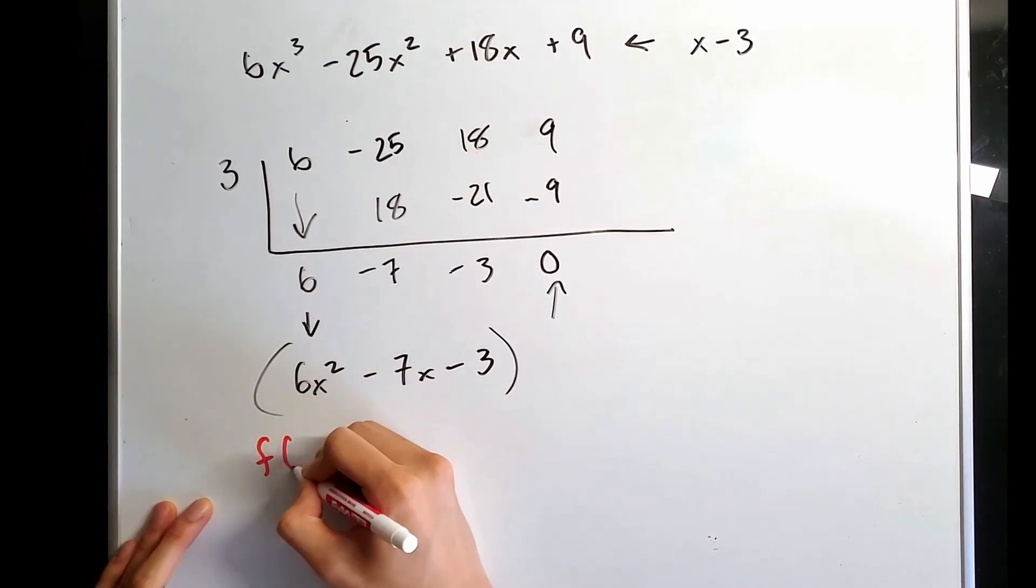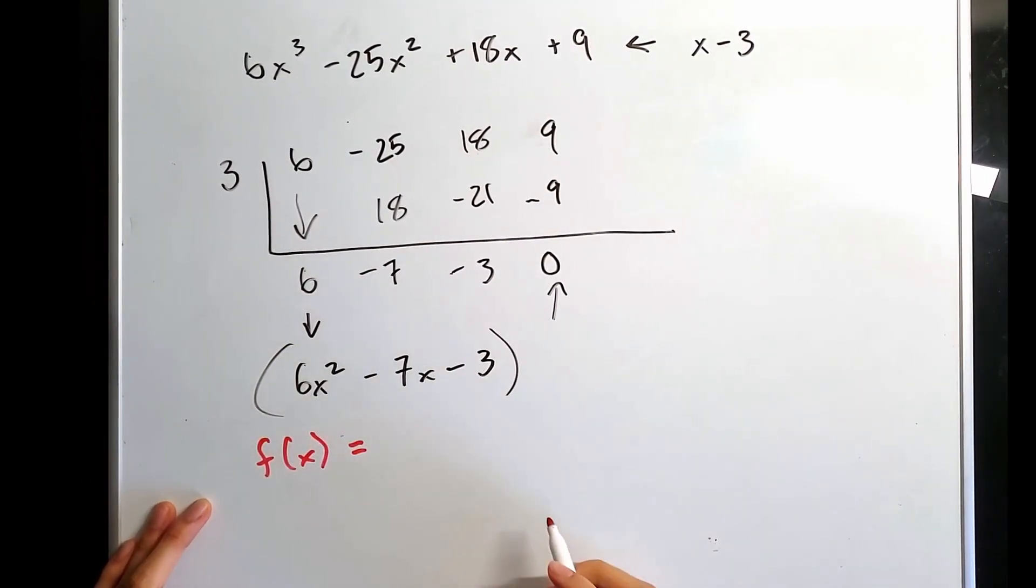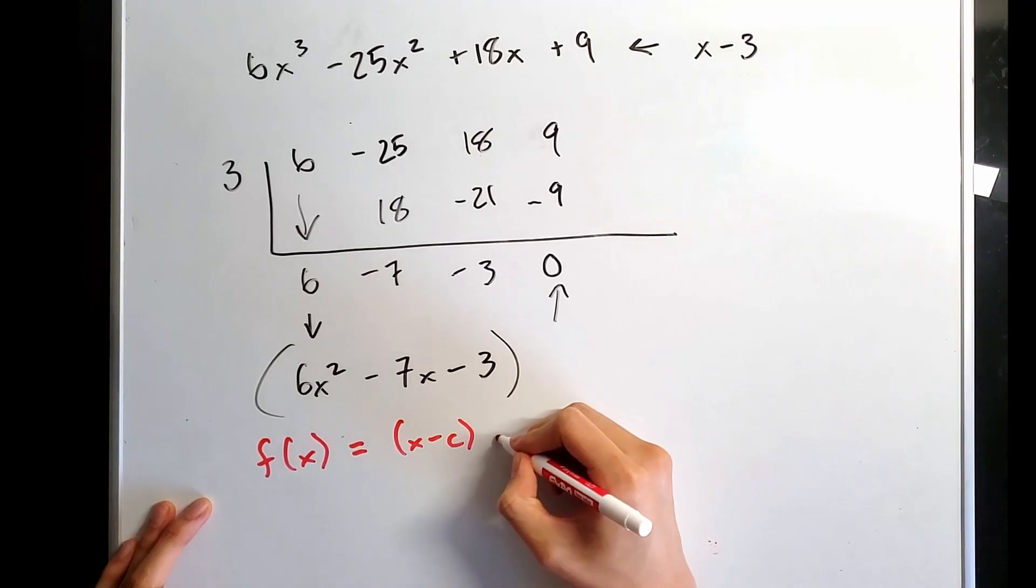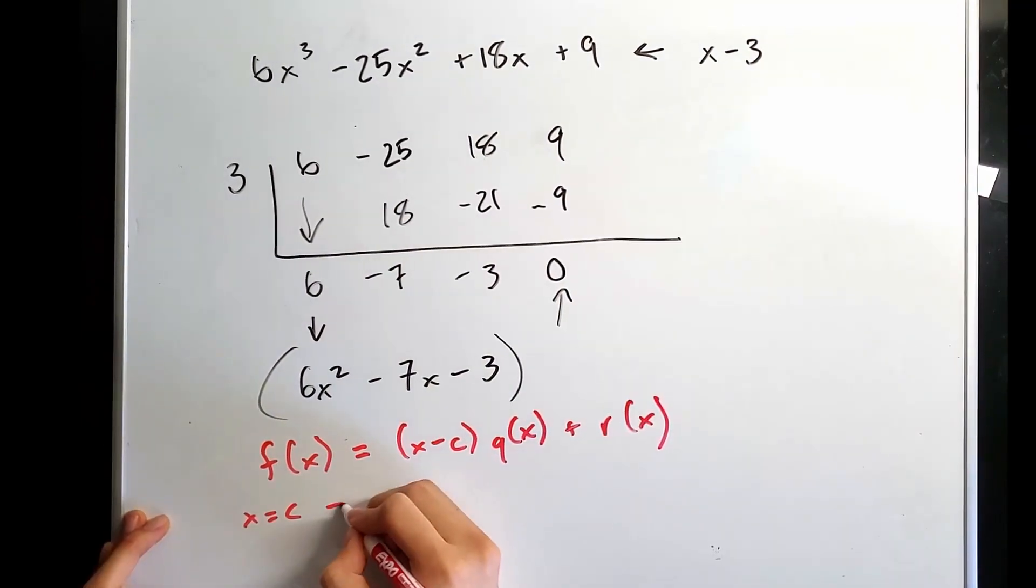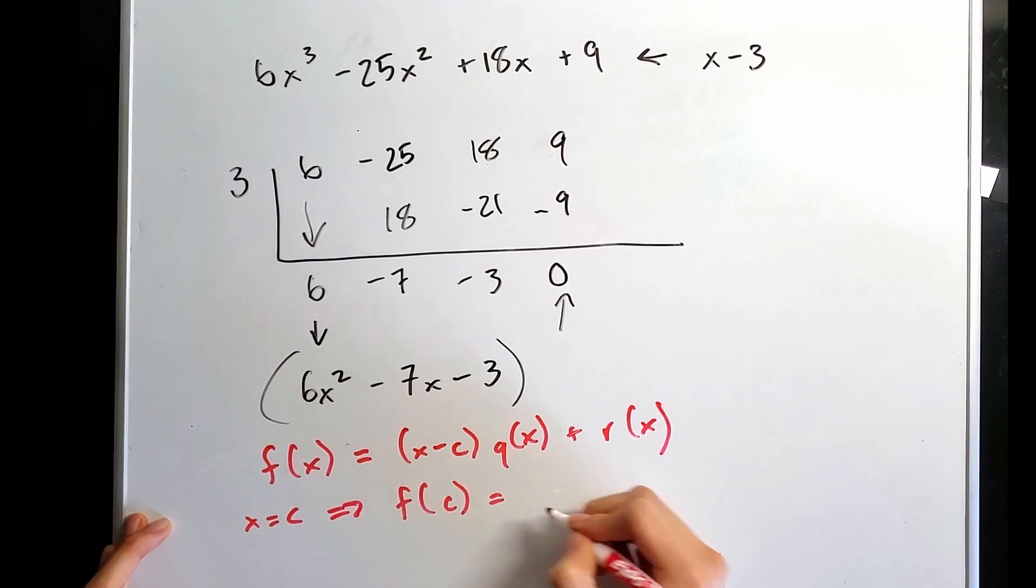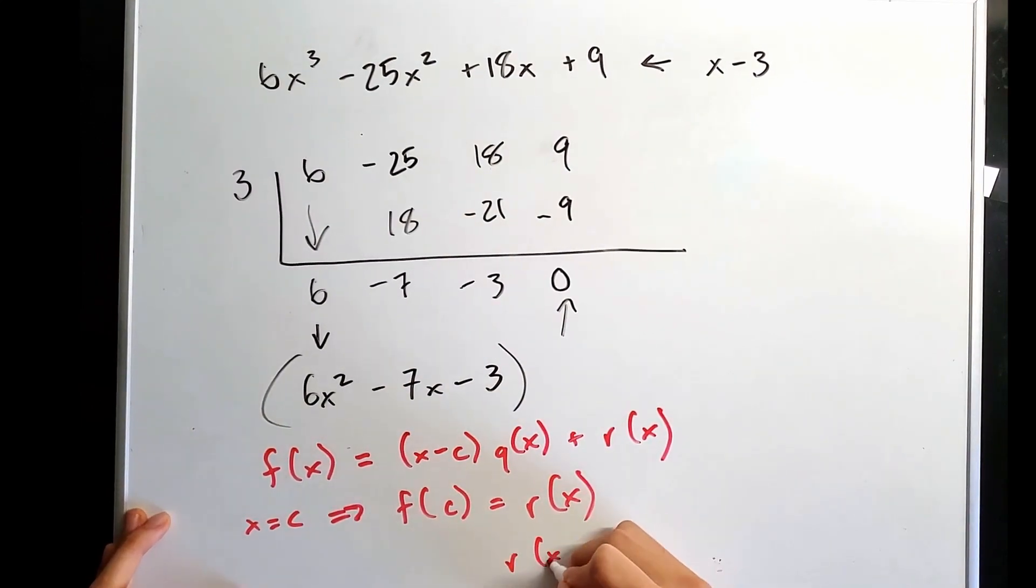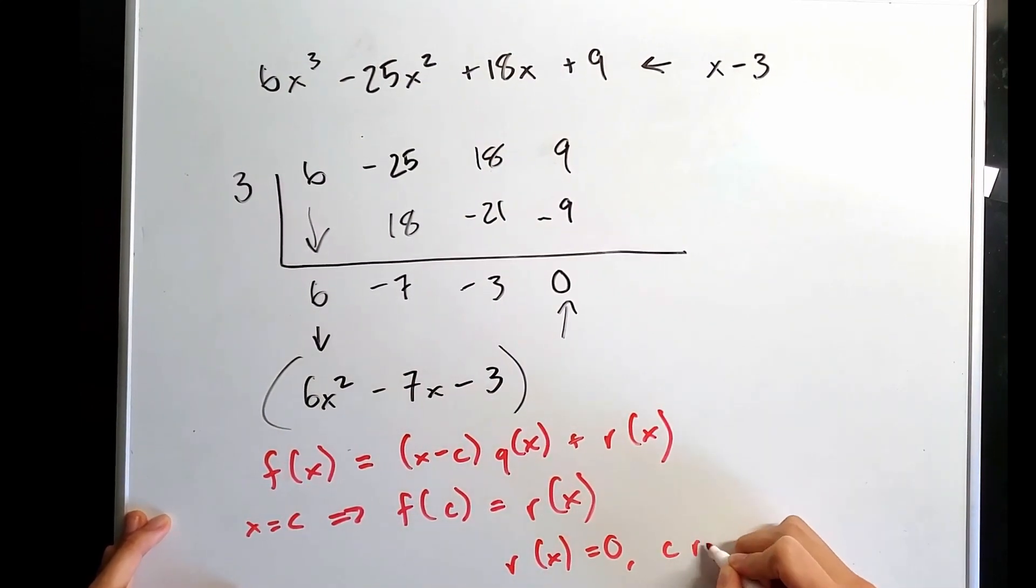So it follows that for some polynomial f of x, if you divide it by x minus c, then you have a quotient function plus a remainder function. This implies that f of c is equal to r of x. If r of x is equal to 0, then c is a root of f of x.